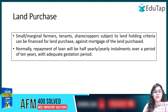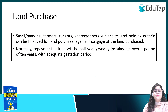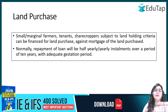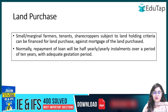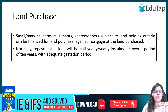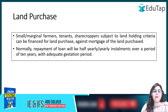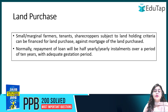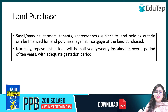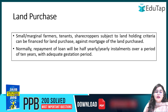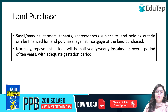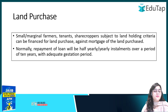If you have to purchase land, you can get a loan for that. Repayment is in half-yearly or yearly installments over 10 years. Small farmers, tenant farmers, and share croppers can finance land holding according to their land purchase. If there is land, there will be mortgage.